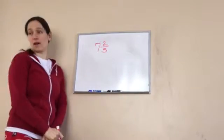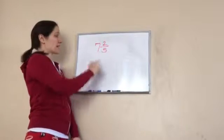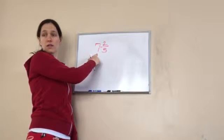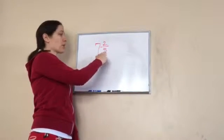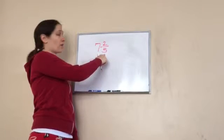Okay, write this one on your paper. 7 and 2 fifths. Now, 7 is a what kind of number? Whole number. 2 fifths is a what? Fraction.